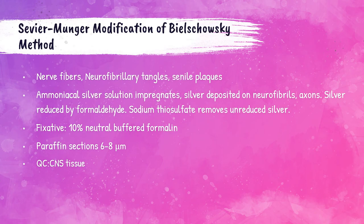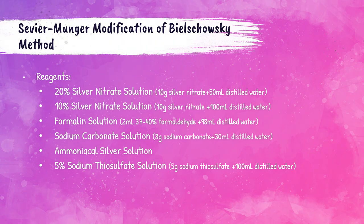The Sevier-Munger modification of the Bielschowsky method is used for visualization of nerve fibers, neurofibrillary tangles, and senile plaques. Ammoniacal silver solution impregnates the tissue, silver deposits on neurofibrils and axons, and silver is reduced by formaldehyde. Sodium thiosulfate removes unreduced silver. Fix in 10% NBF, cut at 6–8 microns; QC tissue should be from the CNS. Reagents include 10% and 20% silver nitrate solutions, formalin solution, sodium carbonate solution, 5% sodium thiosulfate, and ammoniacal silver solution.